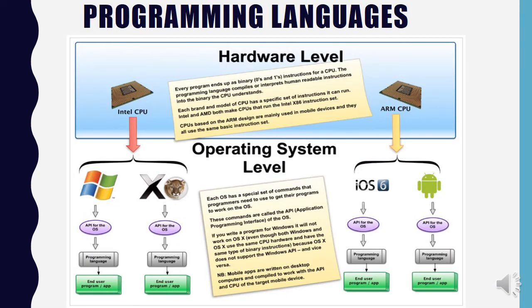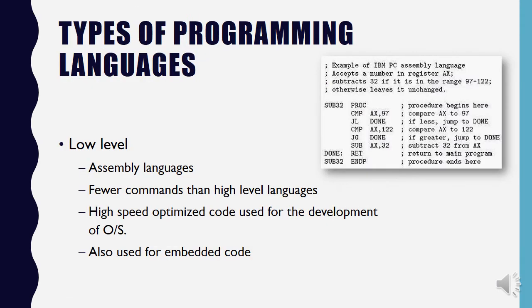We are now going to talk about the different types of programming languages. There are some programming languages that are made to talk to the CPU directly, and then other languages that are at a high level. At a very low level, the type of language that talks directly to your CPU is called assembly language. There are much fewer commands in assembly language than in high-level languages.